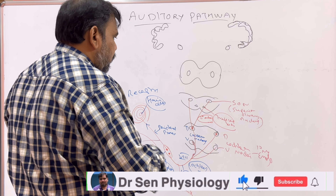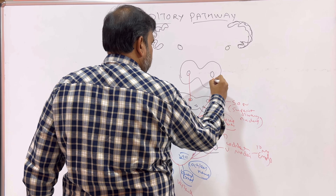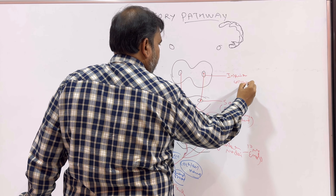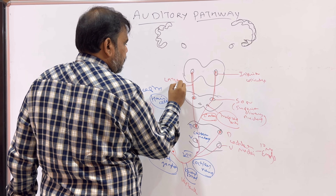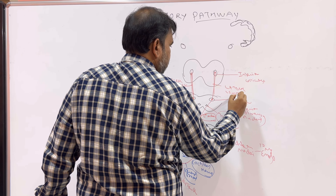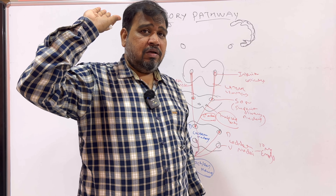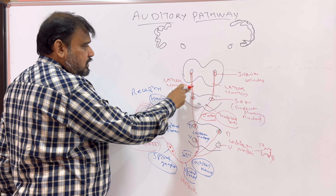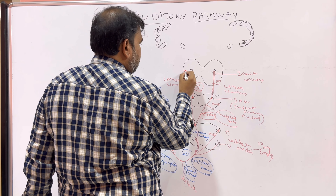Second order neuron goes from the cochlear nucleus to the superior olivary nucleus. Coming to the third order neuron: this is the inferior colliculus. The fibers from the superior olivary nucleus to the inferior colliculus are called the lateral lemniscus — please note that down. The medial lemniscus usually comes in the dorsal column pathway, which is an ascending pathway in the spinal cord. Here it is lateral lemniscus. So the lateral lemniscus is the fiber tract from the superior olivary nucleus to the inferior colliculus, and this is the third order neuron.